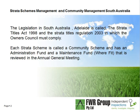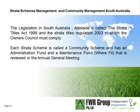Each strata is called a community scheme or a body corporate, which has an administration fund and a maintenance fund where appropriate. If the body corporate or community scheme sees a need for a maintenance fund, they review that once every 12 months — we'll look at that on the next slide.